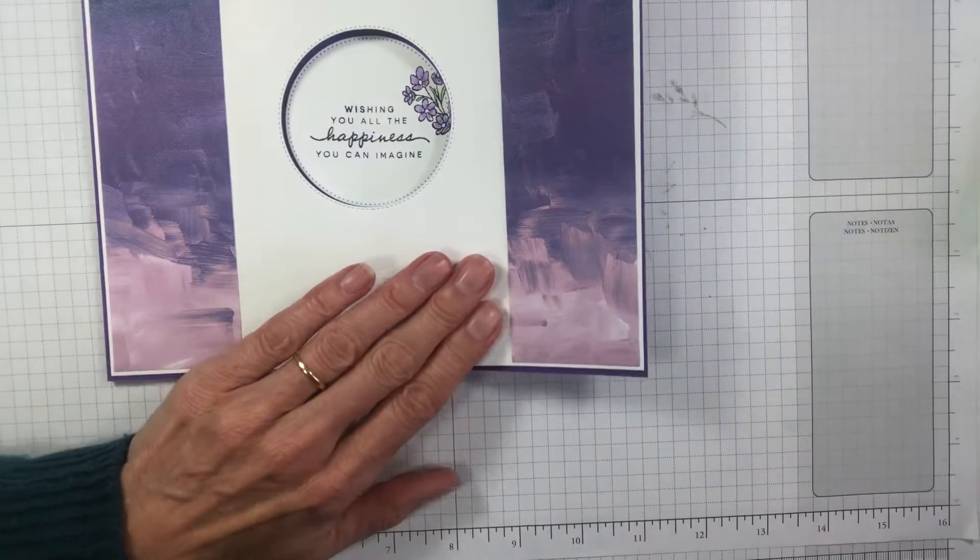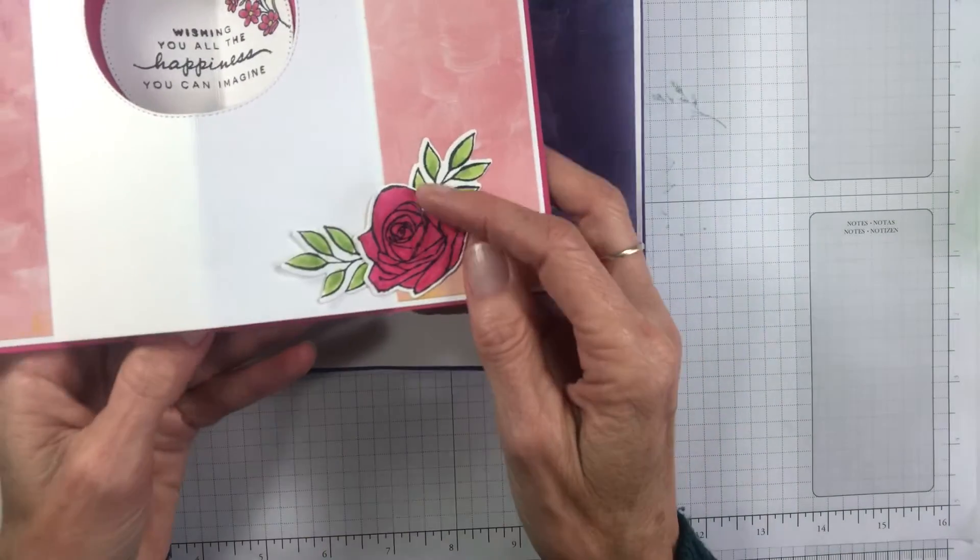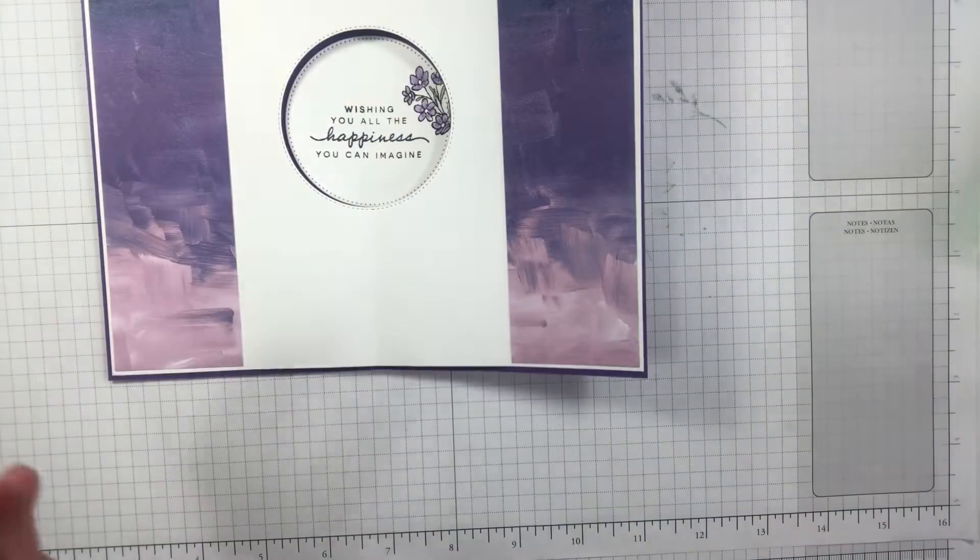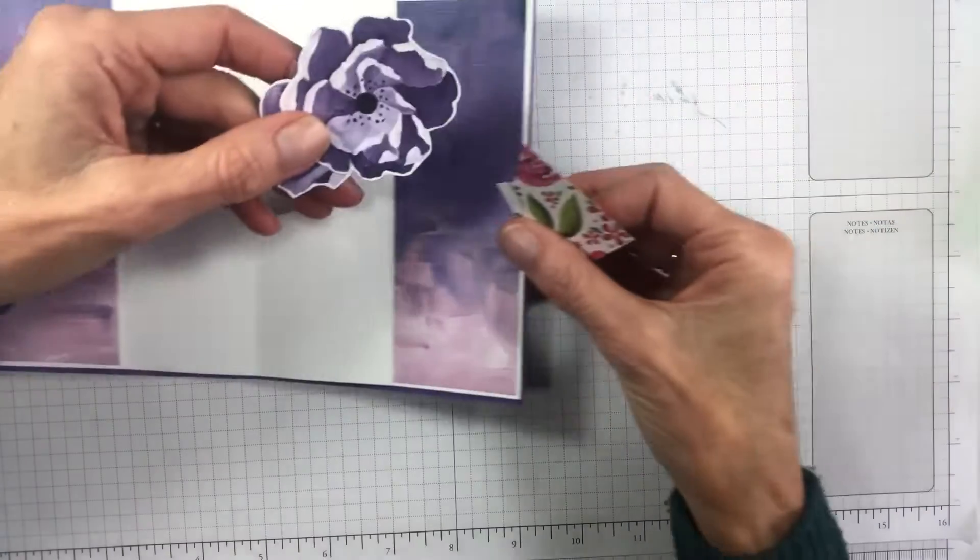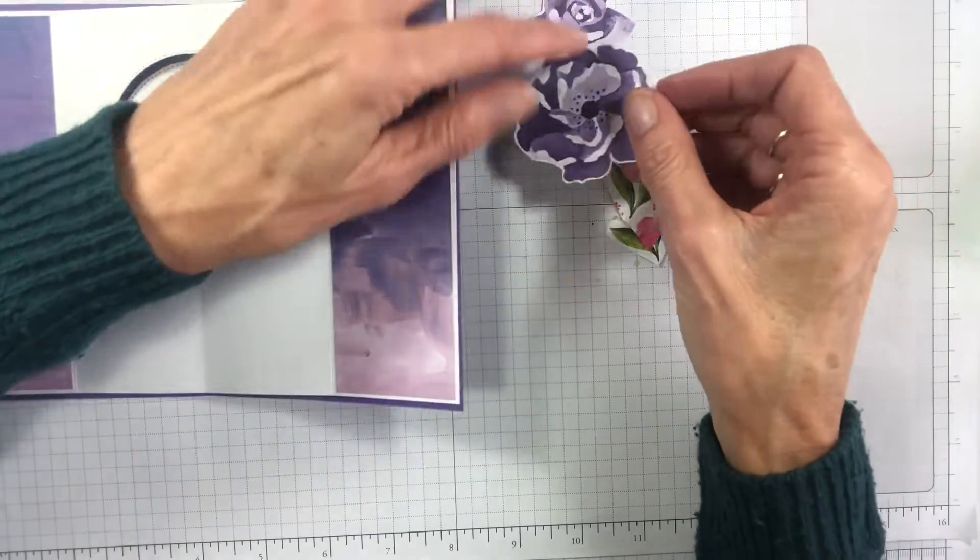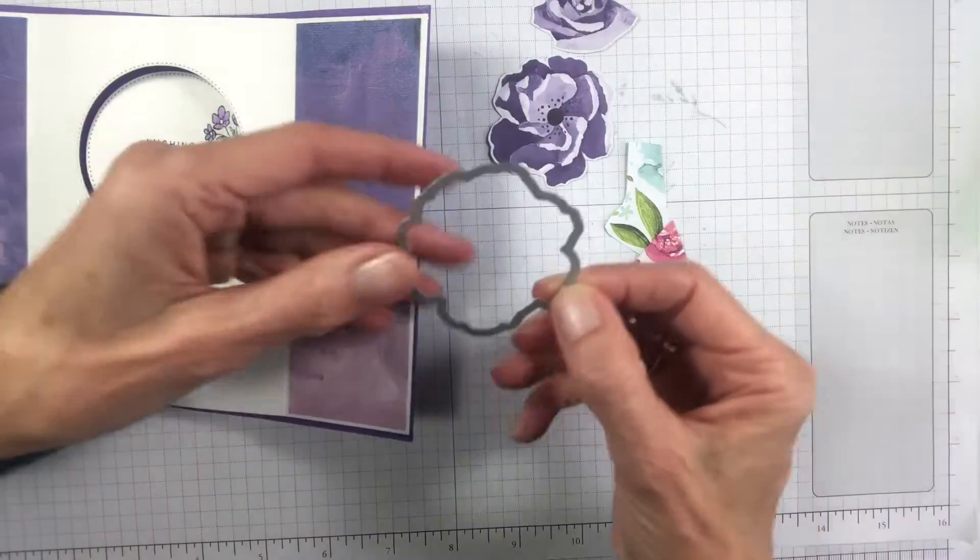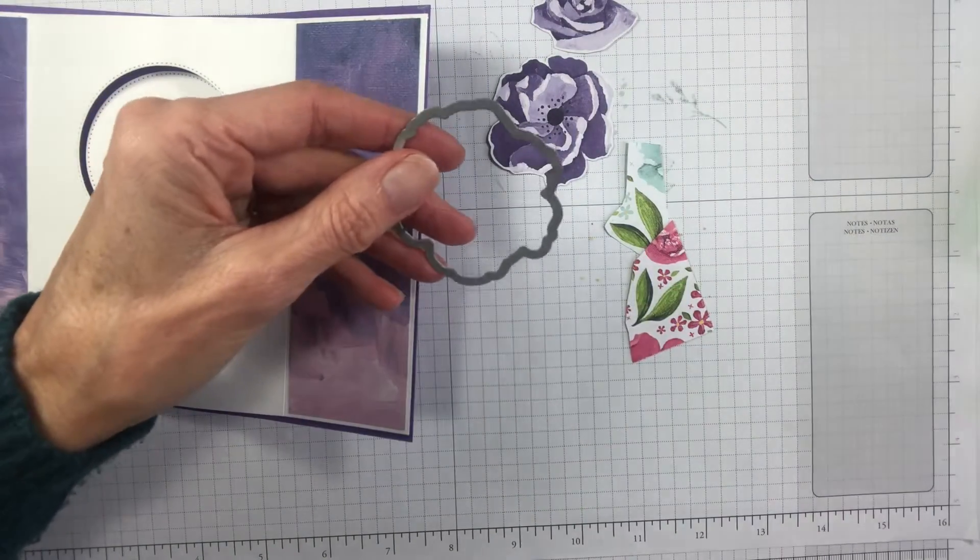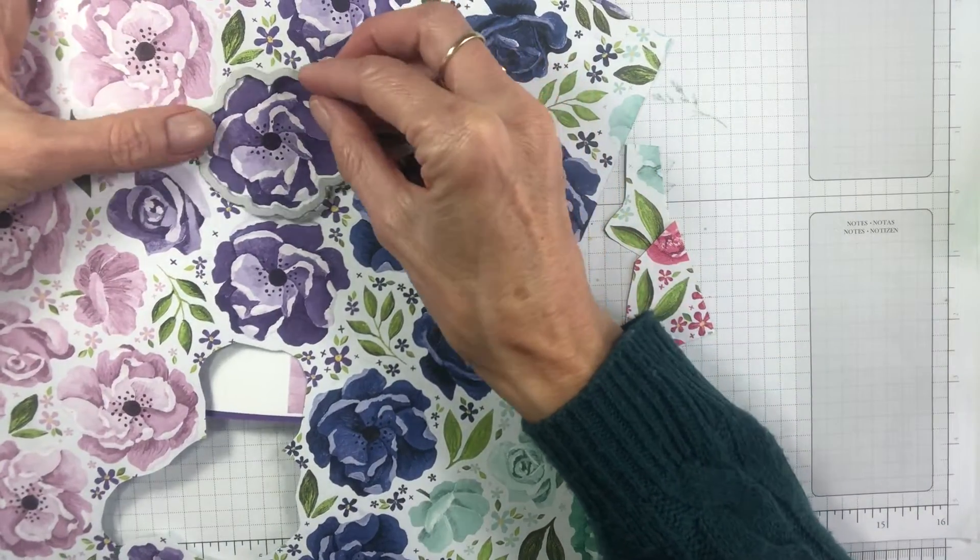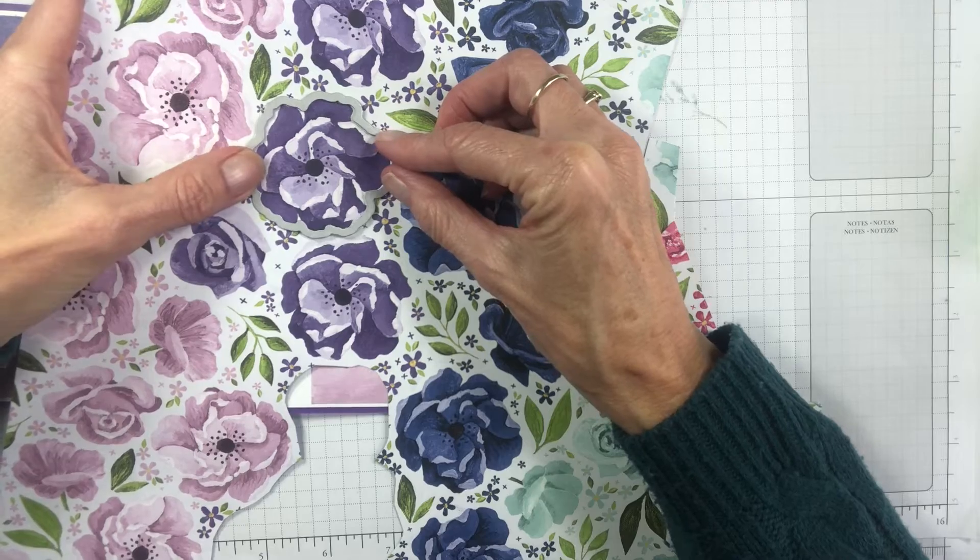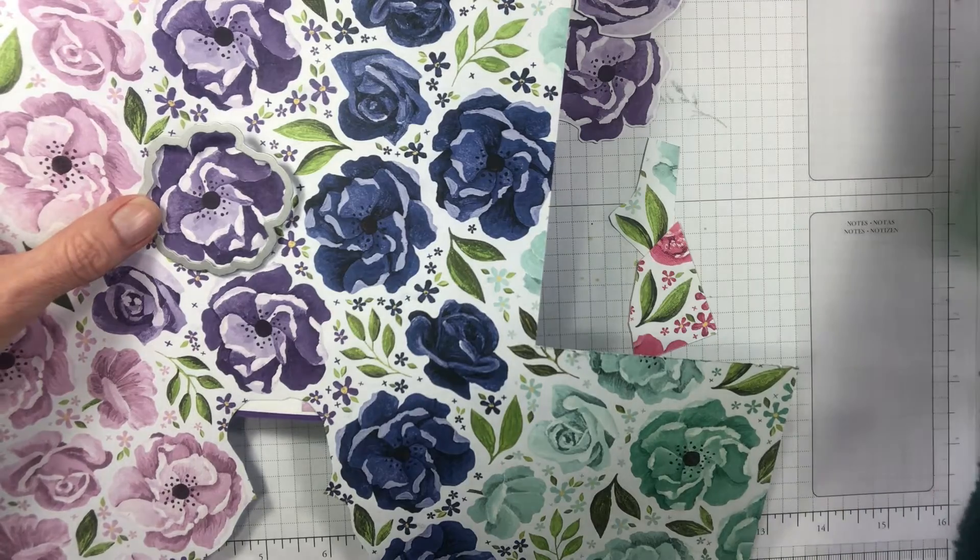Press that down. While that dries, we're just going to add our flower. Now, on this card, I stamped one of the flowers and colored that with the blends. You can do that. But for this one, I'm actually going to use the pretty paper. So I've die cut the flower out already from another project I was doing. But isn't it great that the dies work with the paper and you can cut that out? No fussy cutting with scissors.